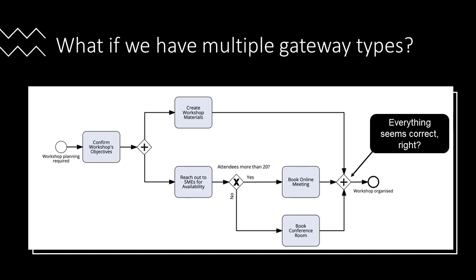In this last example we have an interesting situation where we have multiple gateway types — both parallel and exclusive. We can see that we have an opening parallel gateway and an opening exclusive gateway, however we only have a parallel gateway closing both opening gateways. This should be corrected, and Signavio will also indicate that there is an error here.